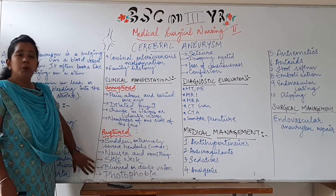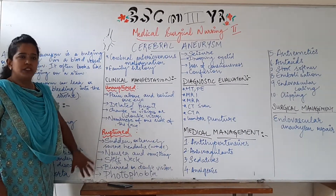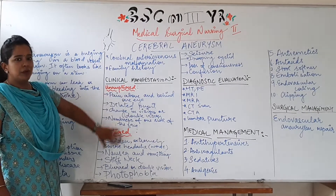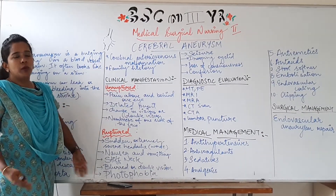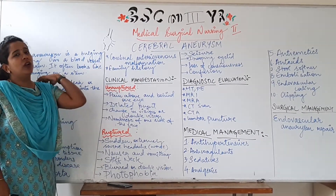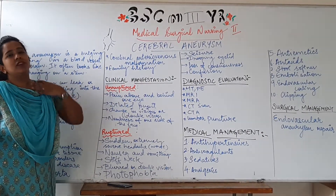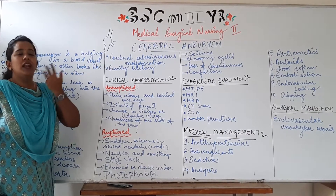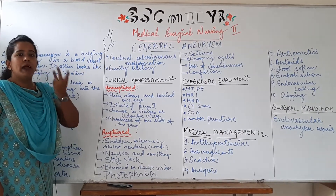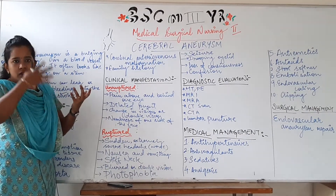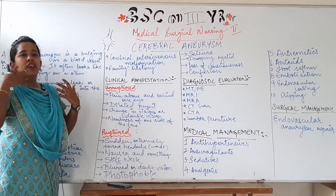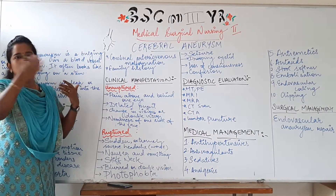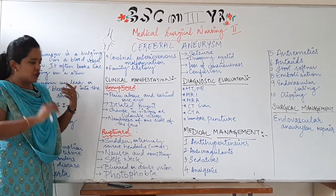Apart from that, there could be blurred or double vision. While in unruptured cases this was discussed, here it is more prominent. Due to hemorrhage, if double vision or change in vision is occurring, it is not unilateral — it becomes bilateral, because the area is fully covered by hemorrhage.